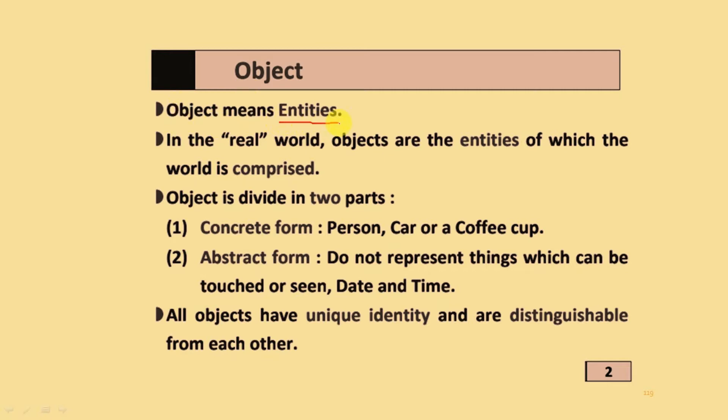Object means entities. In the real world, objects are the entities of which the world is comprised. Objects are divided into two parts.